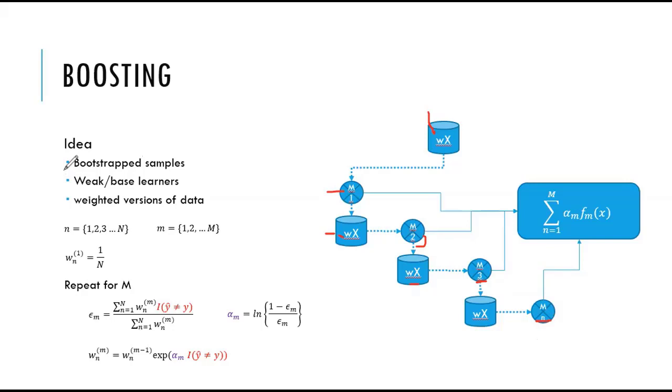The idea is a bit changed. We still use bootstrap samples. We still have weak base learners like decision trees. But the data is weighted every next learner. We weight our data anew and provide the next learner the weighted data such that the new learner can learn only the examples that were misclassified by previous learners.